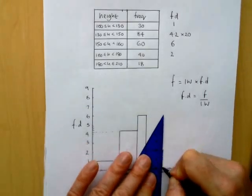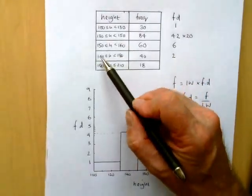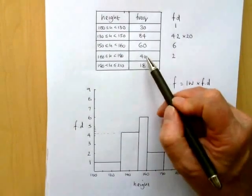So we've got 2 times width. The width is 20. 20 times 2 equals 40.